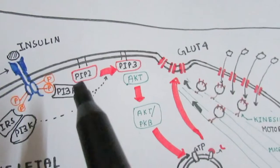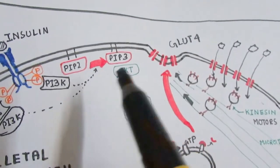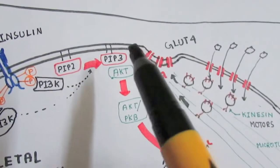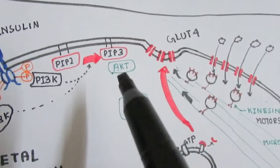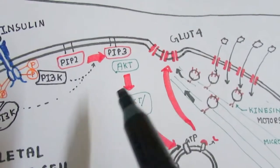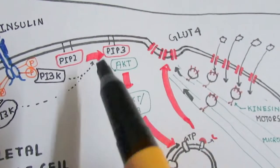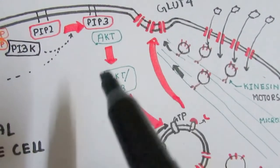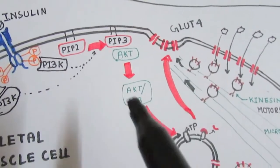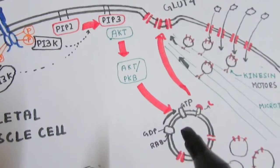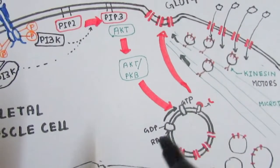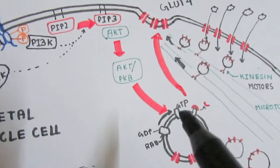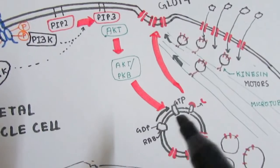PI3 kinase phosphorylates PIP2 to PIP3, and this PIP3—phosphatidylinositol 3,4,5-trisphosphate—activates AKT, also known as protein kinase B. It was found in the AKT8 retrovirus, hence the name. This AKT or PKB will go to the vesicles and convert RAB-GDP to RAB-GTP.